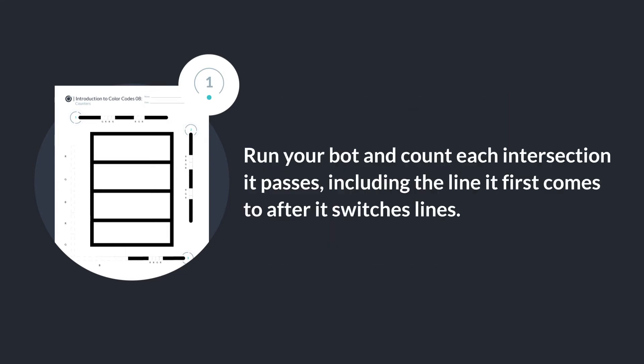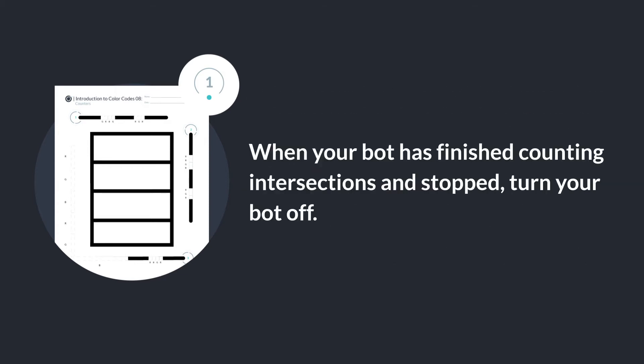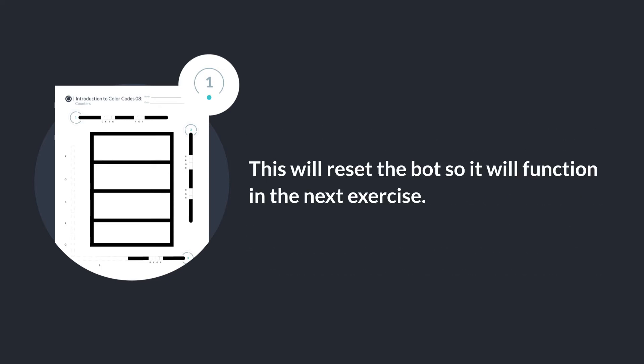Run your bot and count each intersection it passes, including the line it first comes to when it switches lines. When your bot has finished counting intersections and stopped, turn your bot off. This will reset the bot so it will function in the next exercise.